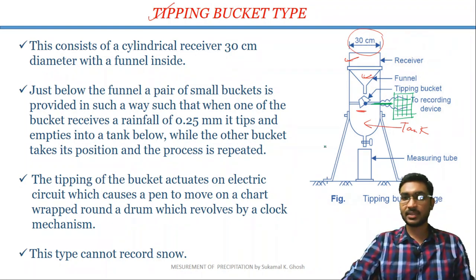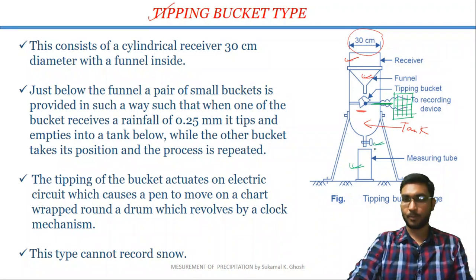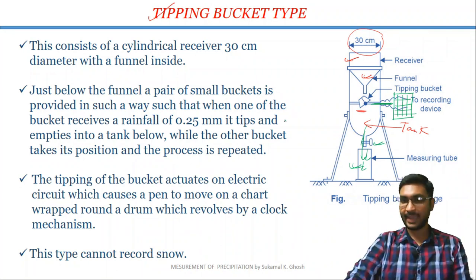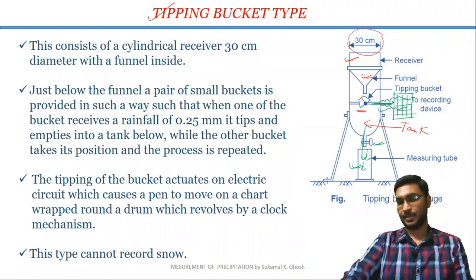The purpose of the measuring tube is: when the tank reaches its maximum capacity, we open this particular knob and the water or rainfall falls into the measuring tube. By collecting the rainfall from this measuring tube, we may cross-check the data that has been plotted by the pen on the paper.